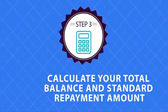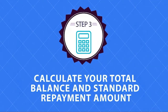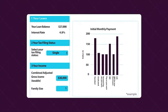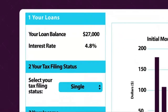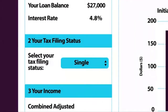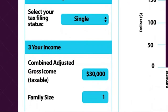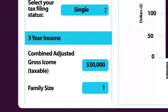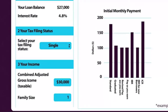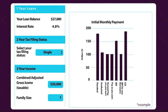Step three: calculate your total balance and standard repayment amount. Using the repayment estimator on studentloans.gov, enter your loan balances and interest rates to calculate a standard repayment amount. With standard repayment on your federal loans, scheduled monthly payments are the same every month for the life of the loan. We'll discuss other repayment options later.